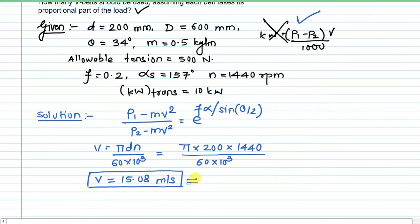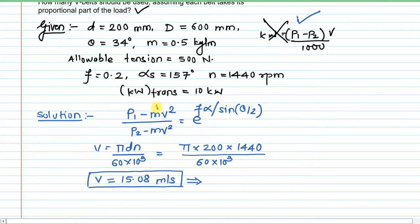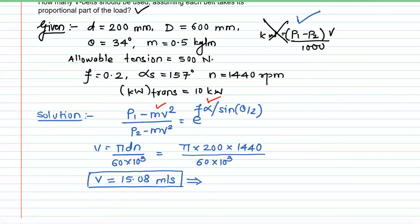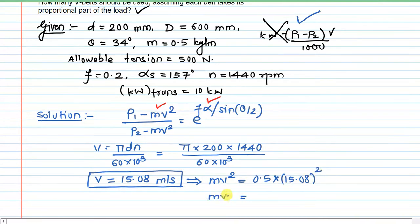With velocity known, we calculate the term Mv². This appears in both the numerator and denominator of the belt equation. Mv² = 0.5 × (15.08)² = 113.70 N.